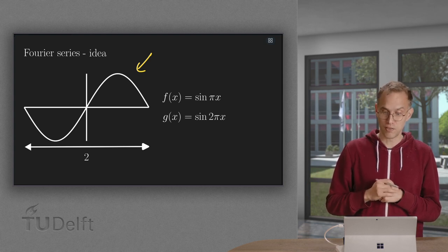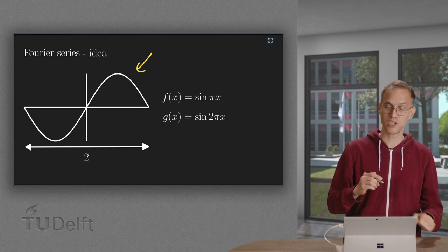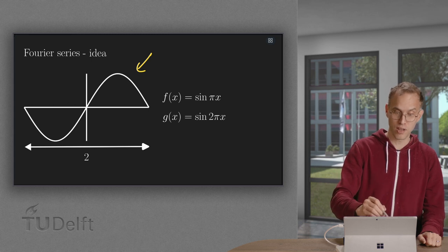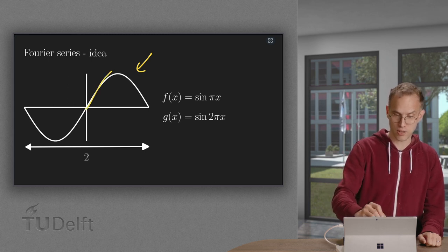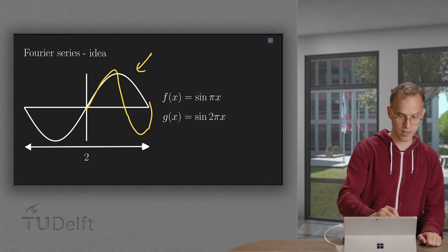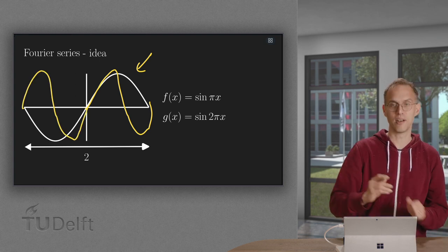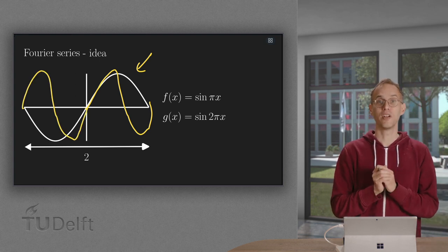If we now have g(x) equals sine 2 pi x, this is also periodic. But this one goes twice as fast, so more like this and like that. So there we have our g.